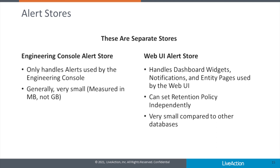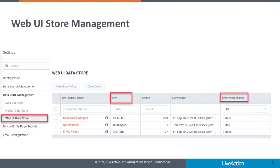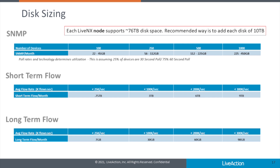One final item on data stores concerns the alert stores. Currently there is a different store for the web UI and the engineering console. The sizing of these stores will depend on the number of alerts generated in your network — the size is measured in megabytes, not gigabytes, so the impact on your data management should be very small. The web UI alerts database is broken down into different sections for dashboards, notifications, or entity pages, and each section can be managed with its own retention policy providing greater flexibility. You will find the web UI data store page under system settings, data store management. To help with disk sizing, we've produced a high-level estimator to get you on the way to specifying your system.